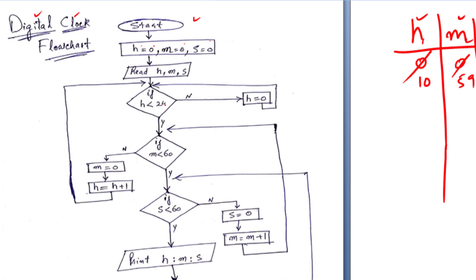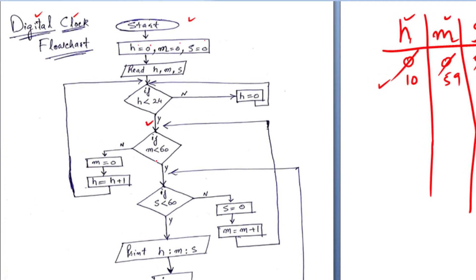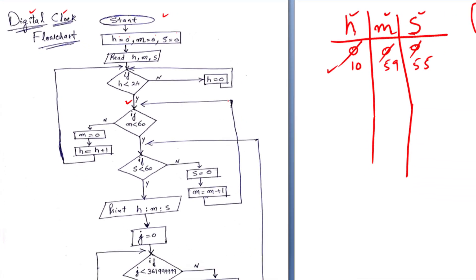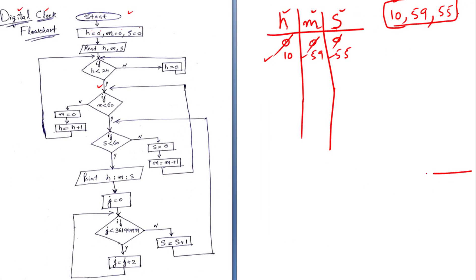Here is the condition: if hours is less than 24. Is this hours less than 24? Yes, the condition is true, so we move along with yes. Again I check if minutes is less than 60 — it is 59, so yes. And if seconds is less than 60 — this is also less than 60. So yes, print hours, minutes, and seconds. I display it as 10:59:55.